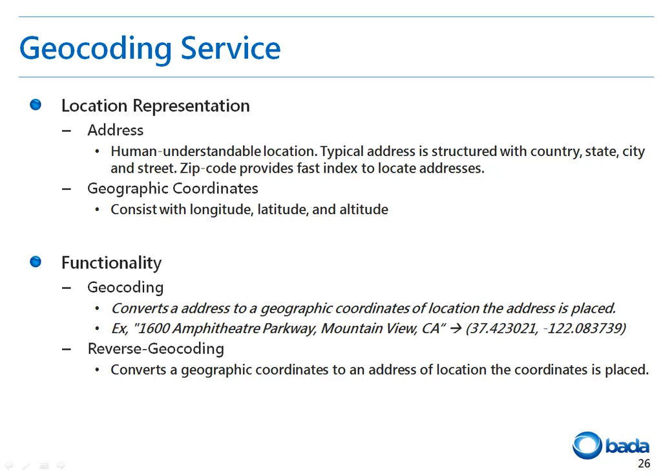Now let's discuss the geocoding services. In the geocoding service, the location is represented as an address and geographic coordinates. The address is the location represented in a human-understandable format with country, state, city, etc. The geographic coordinates consist of the latitude, longitude, and altitude of the location. This is used for mapping a location onto a map or getting a location from the GPS. The main functionality of this service is geocoding and reverse geocoding. In geocoding, the address is converted to the coordinates of the location. In reverse geocoding, the coordinates are converted to the address corresponding to the location.